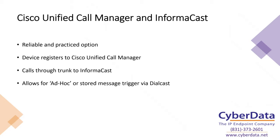When a particular number is dialed from one of our devices or any SIP device, you can route that call with a route partition through a trunk to InformiCast. InformiCast uses Dialcast to determine: this number was called, that means I need to play this message to this message group. Those messages that can be triggered include an ad hoc page — what we call a live page where whatever you say through the microphone comes out through the speakers live — or it can trigger a stored message, similar to stored message capability in our speakers or paging amp.